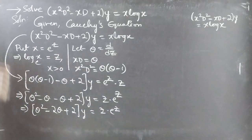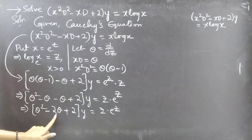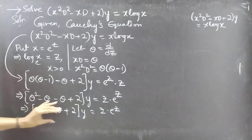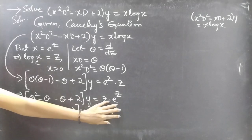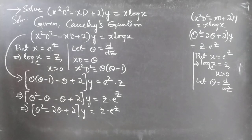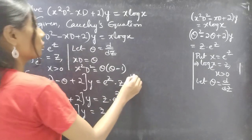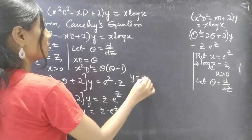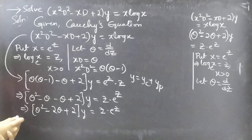So we have reduced the given differential equation with variable coefficients to a differential equation with constant coefficients. This is now in operator form: f(theta) into y equals some function of z. The general solution is given by y equals yc plus yp. So we will find yc and yp.